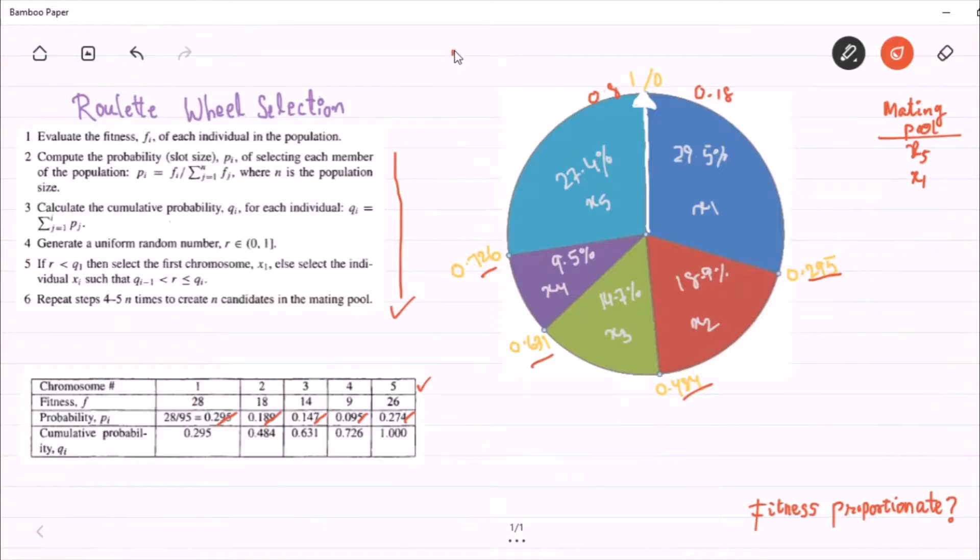Because we have to choose three individuals to the mating pool. So, we have to spin the wheel once again. And when the wheel stops, if my wheel is pointing to suppose some value 0.5,